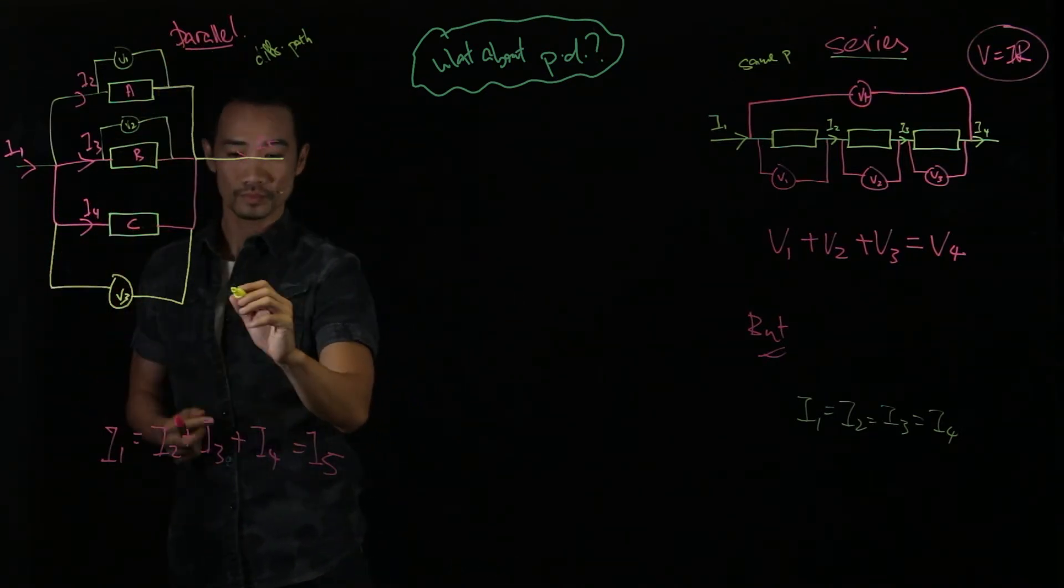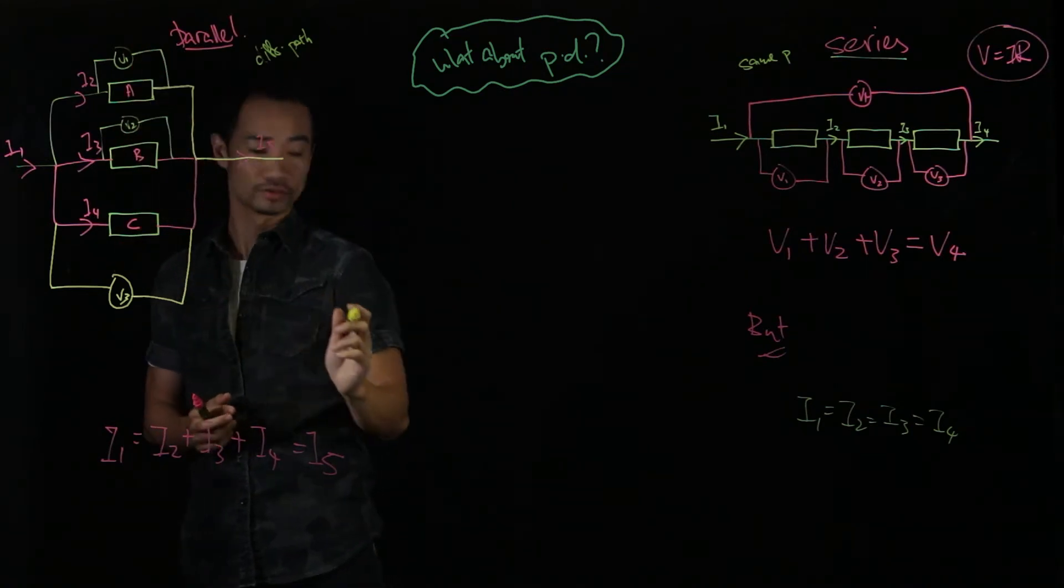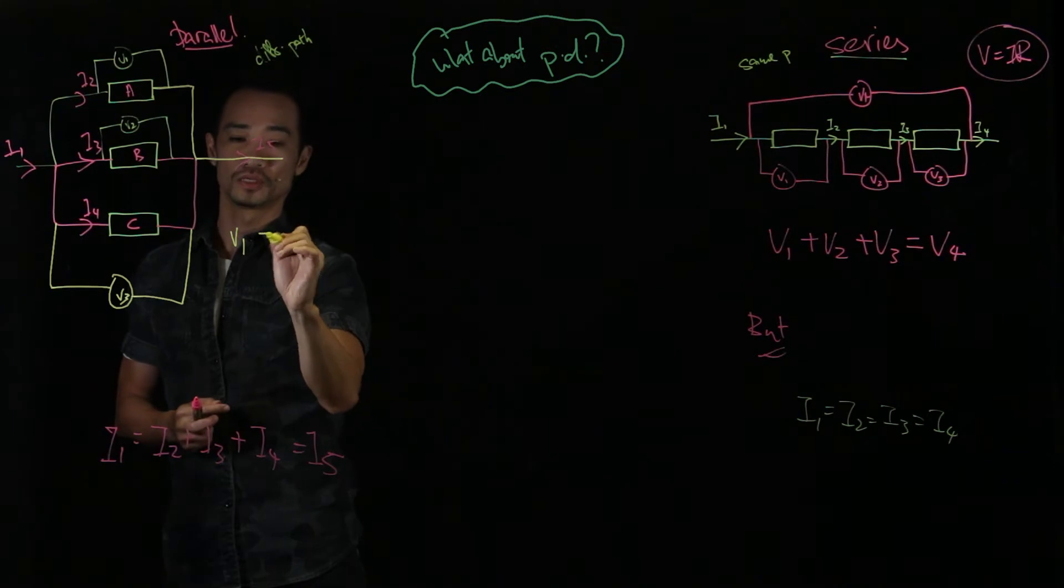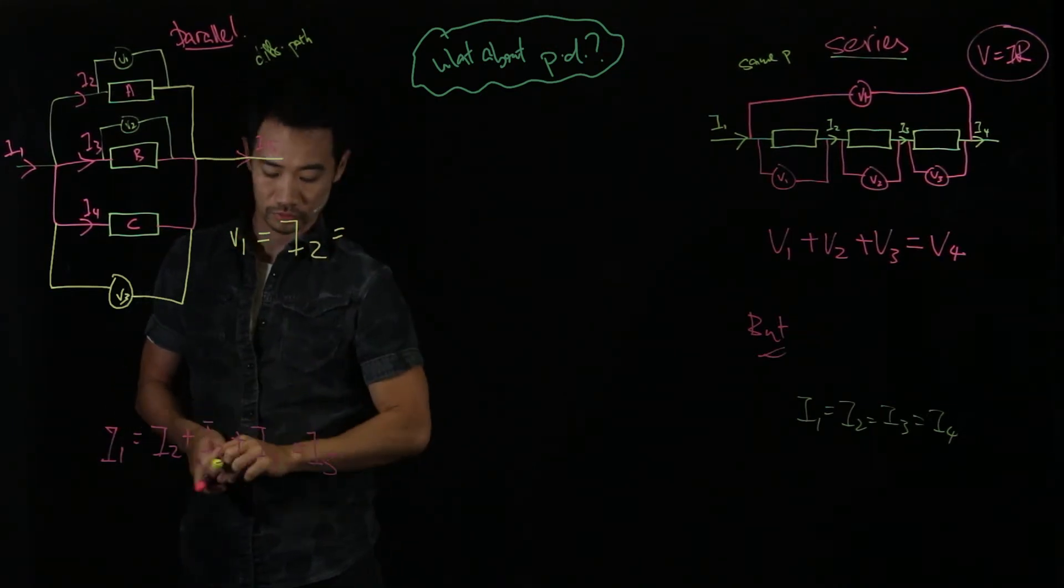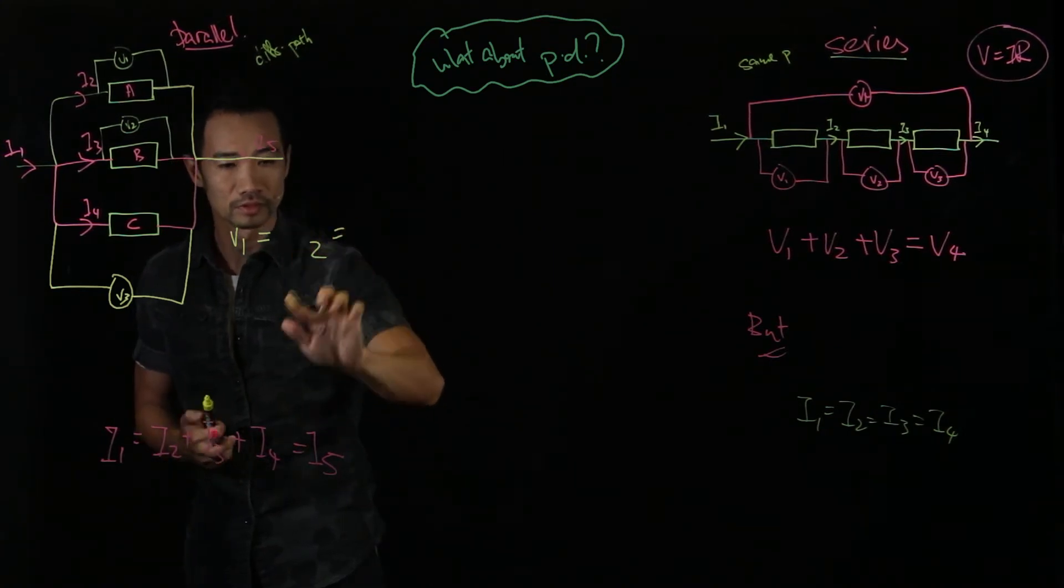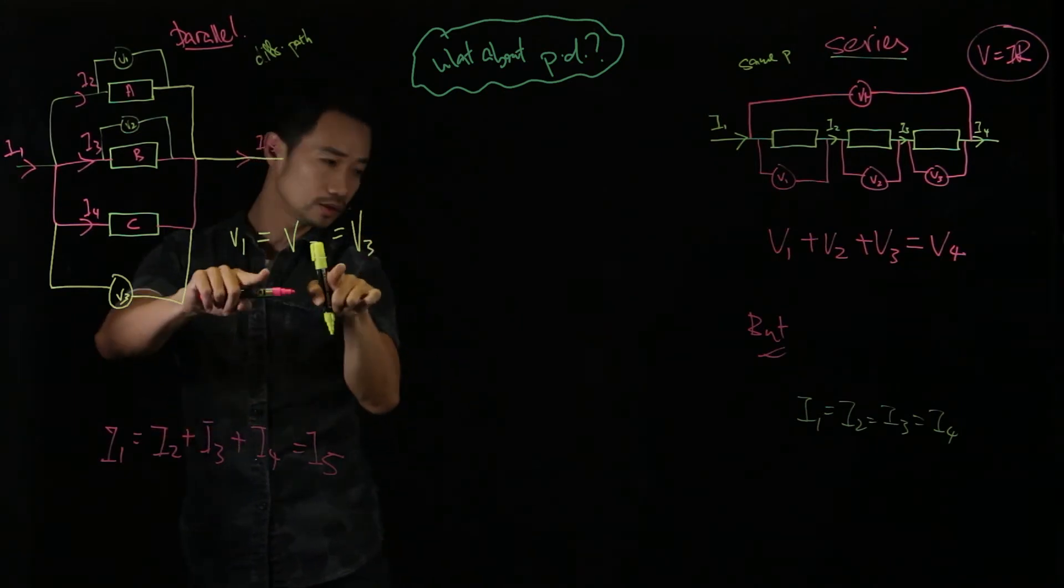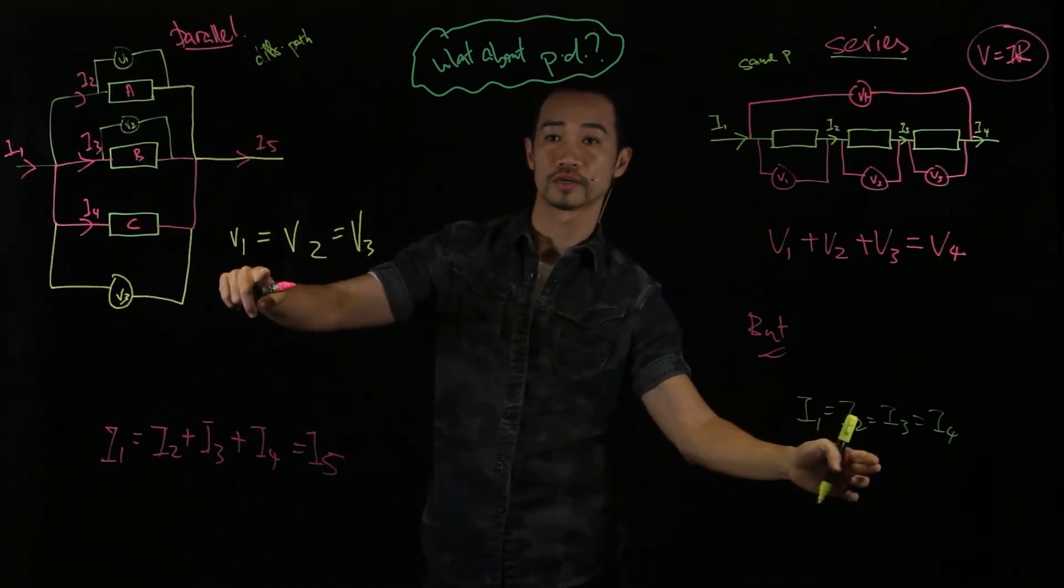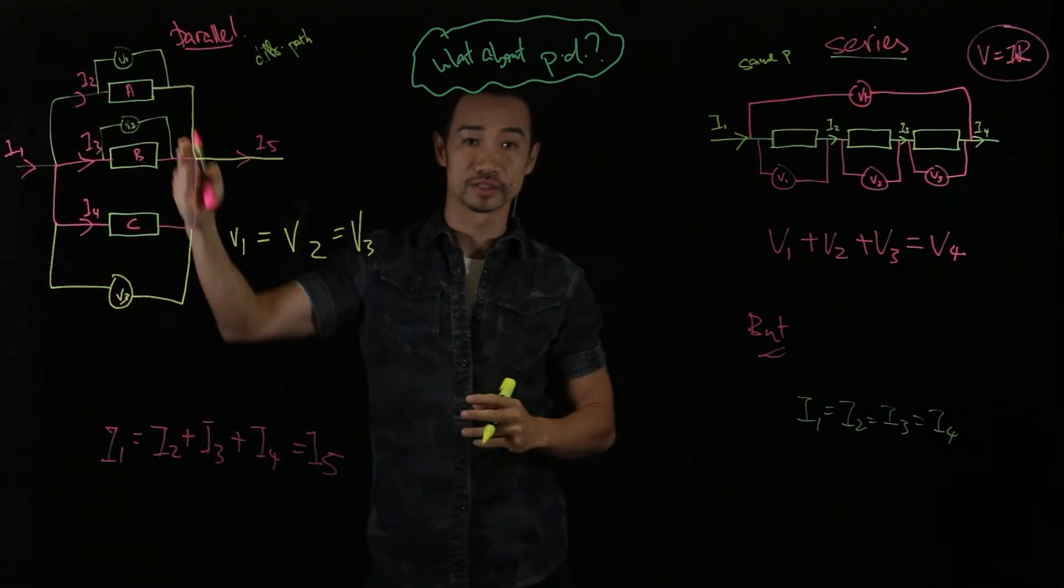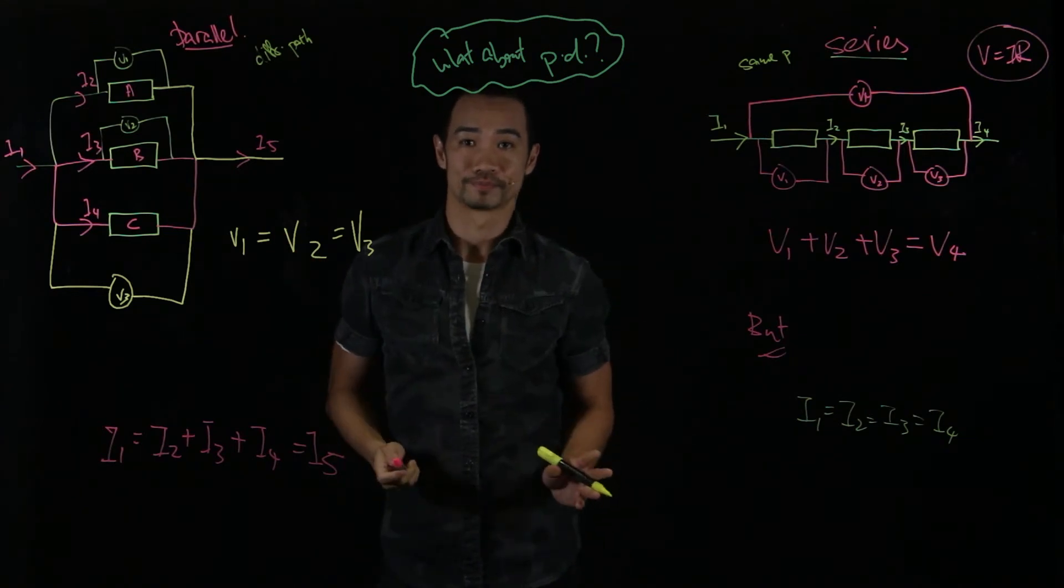So in this case, how potential difference behaves in a parallel fashion is that V1 will be equal to V2 will be equal to V3. You see? These two. It's the same. So the potential difference to go across each of the resistors connected in parallel, they are all the same.